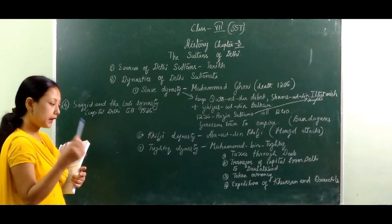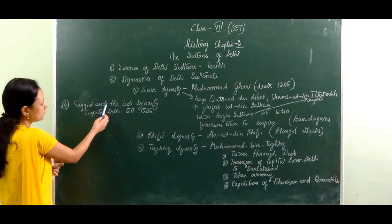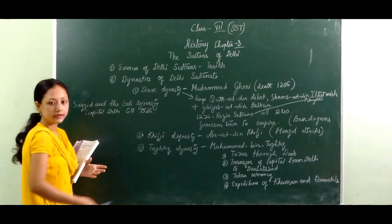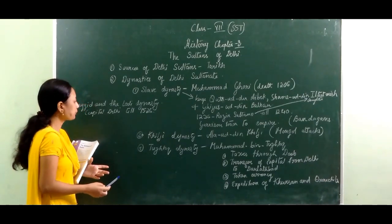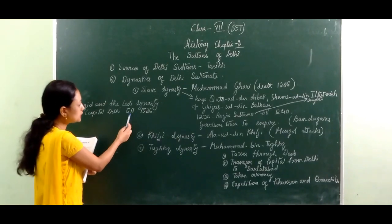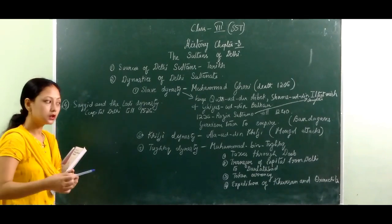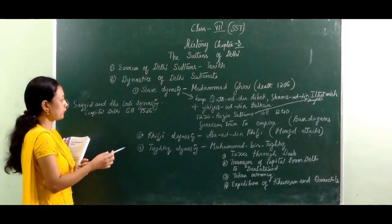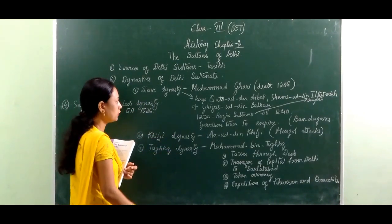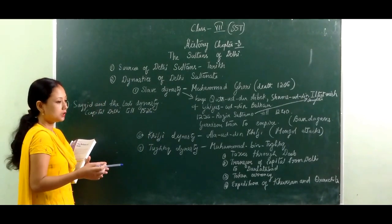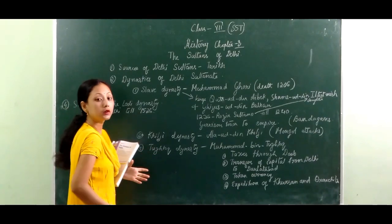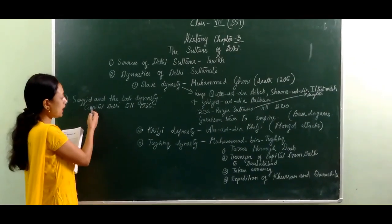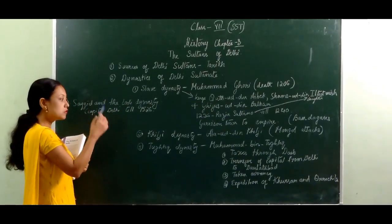After Muhammad bin Tughlaq, the last dynasties before the Mughals were the Sayyid and the Lodi Dynasty. We do not have many detailed records of the Sayyid and Lodi dynasties, but they ruled Delhi for a long period of time until 1526, when the Mughal Dynasty came to power. Among all these dynasties, the Tughlaq Dynasty was considered one of the most powerful before the Mughals.